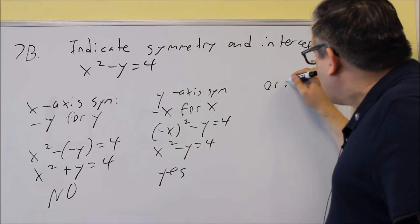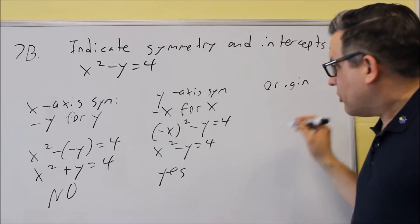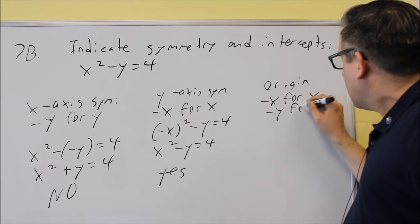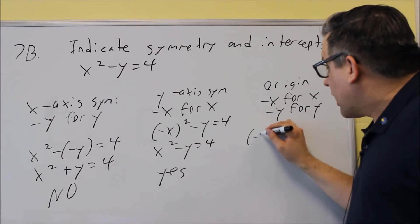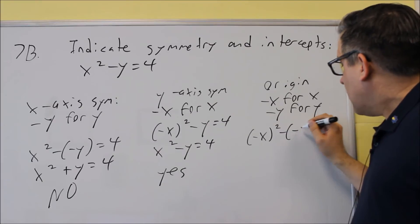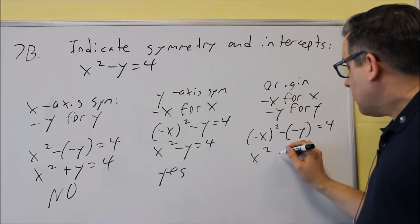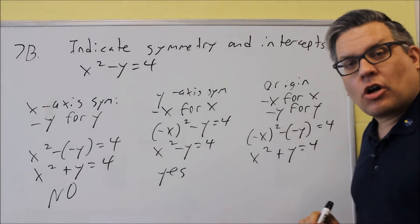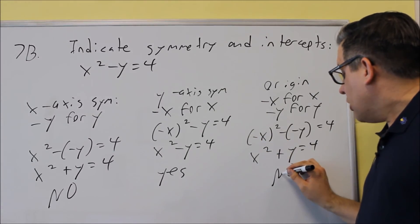Now we still have to check the other one just to make sure. So let's check the origin symmetry. For origin, negative x for x, negative y for y, we're going to do both of them. So put a negative x in for x, negative y in for y, and we simplify it, and we do not get the same thing as we started with. This is not the same as the original one, it differs by a sign. This would be no.